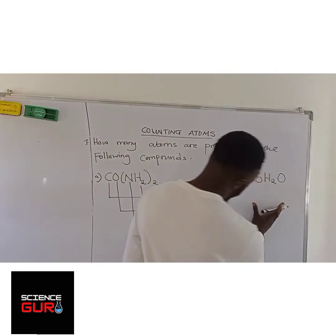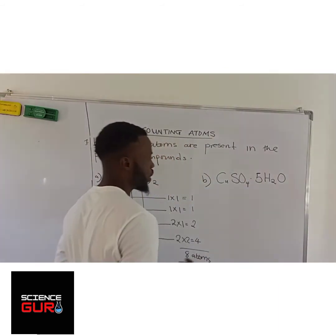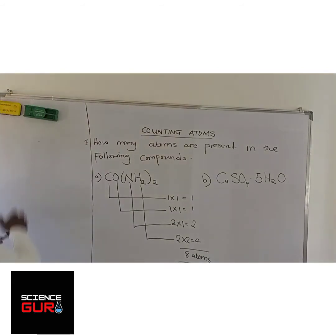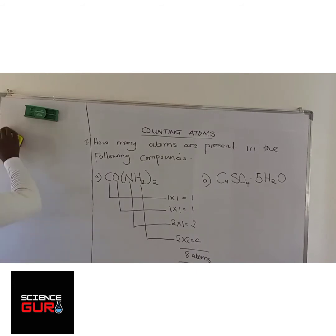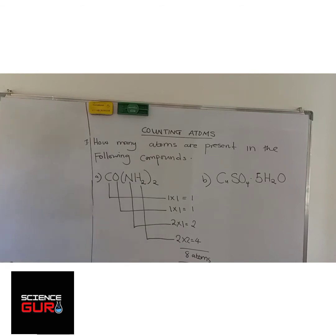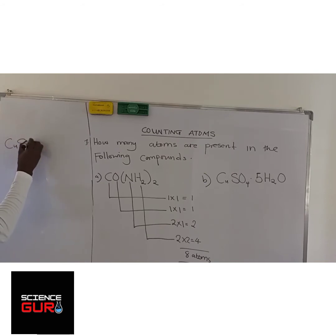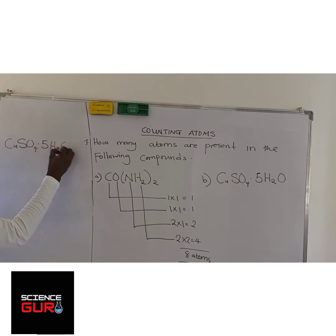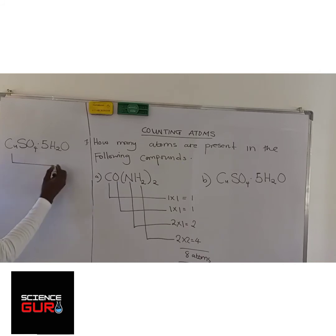So we come here to copper(II) sulfate pentahydrate. We're trying to find the number of atoms present. Copper sulfate — CuSO₄ plus five — so this is simple. How many coppers are present? One times one.